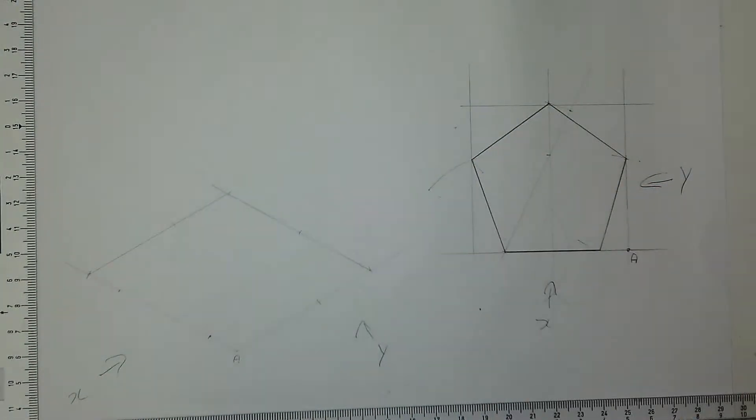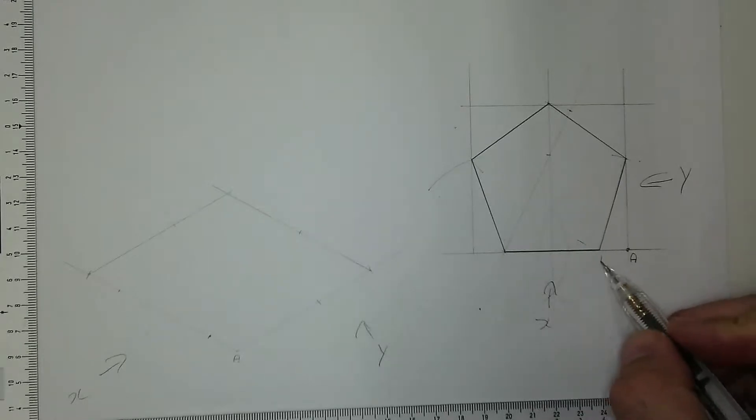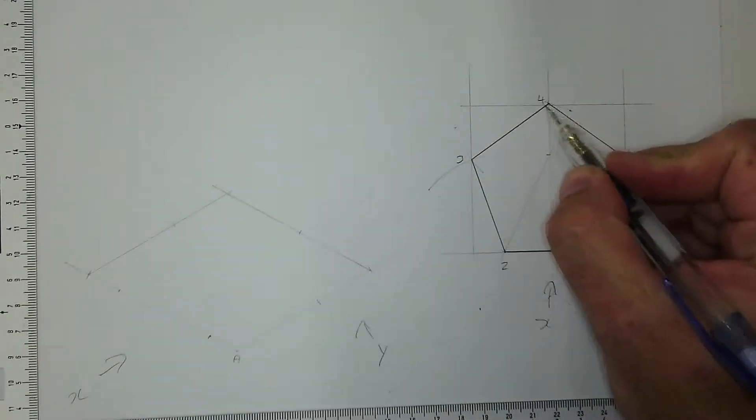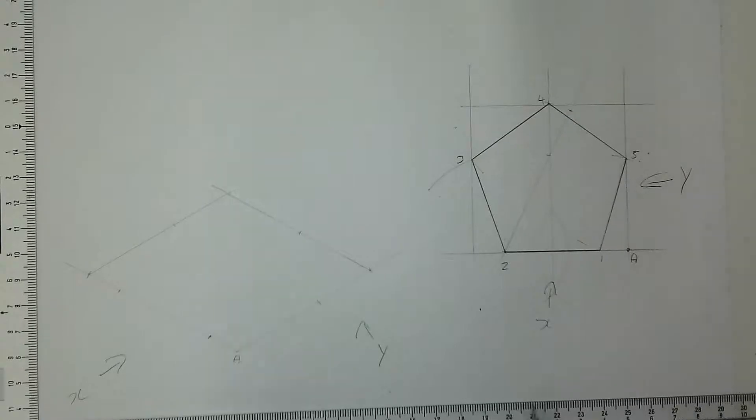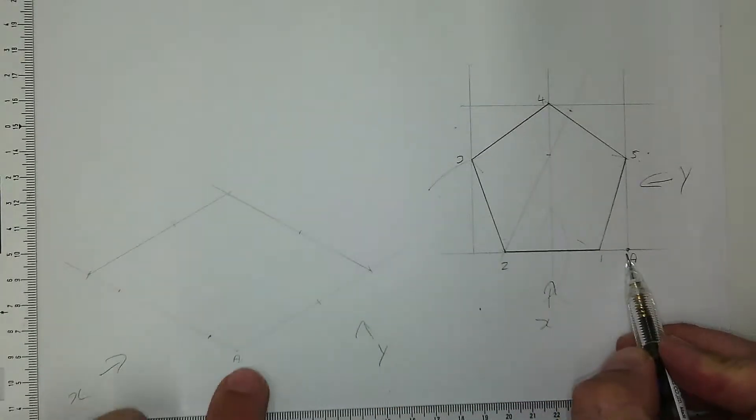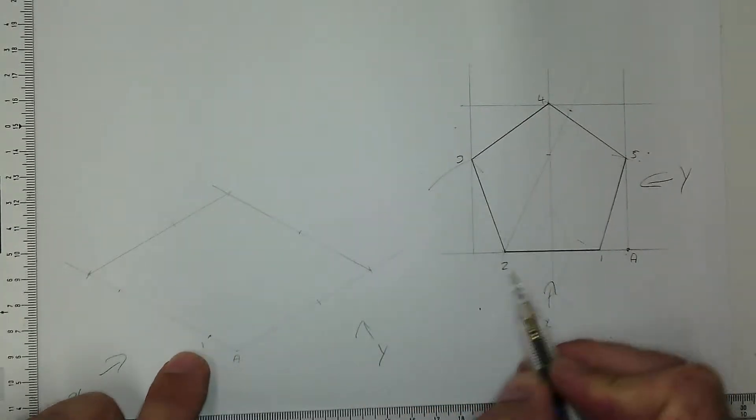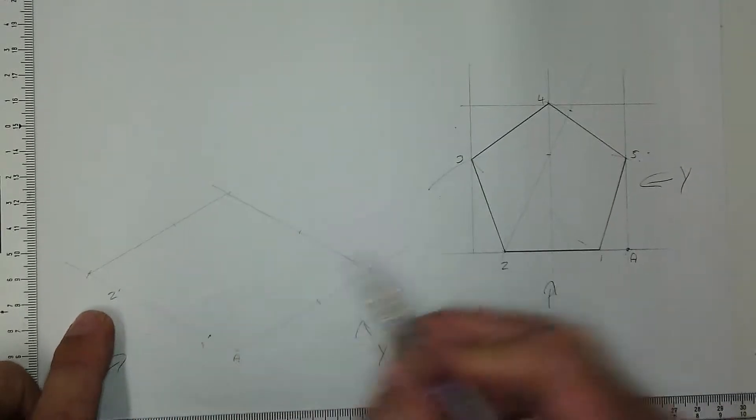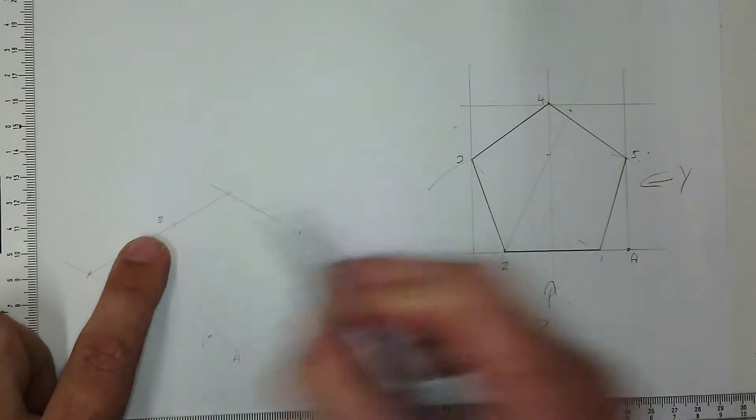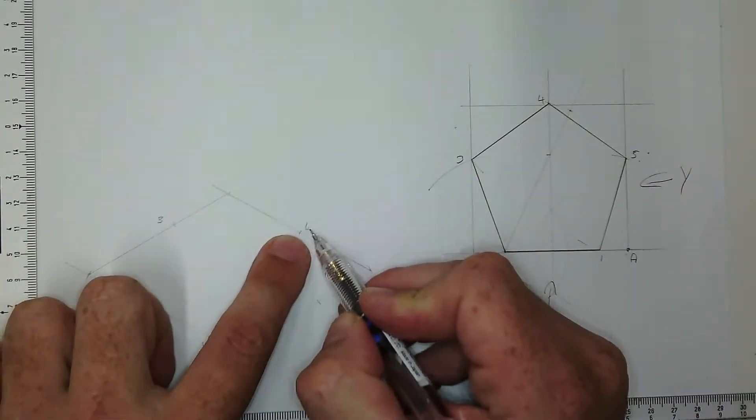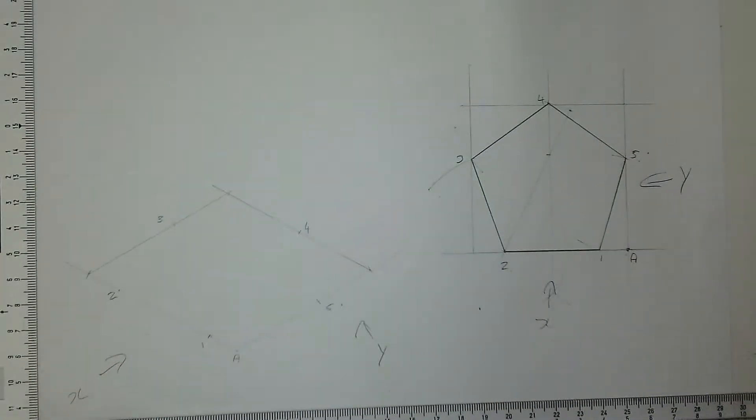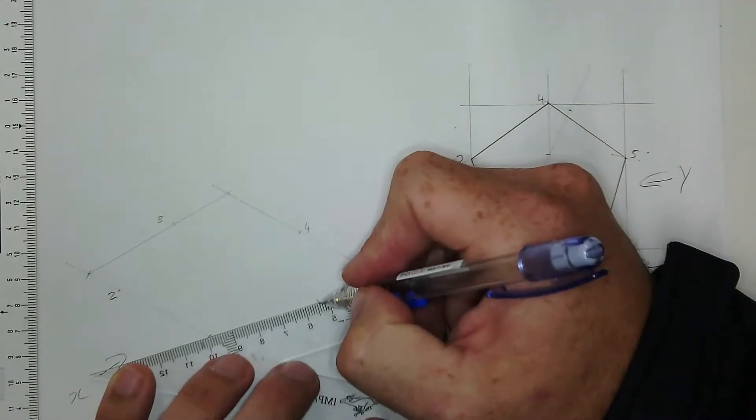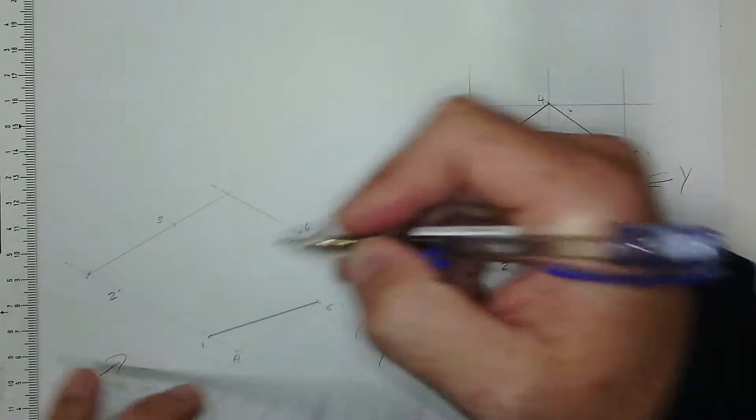So if I number this one, two, three, four, and five, point A is here, so that'll be my point one. One, two, three, four, and five. Connect all your numbers, all your points.